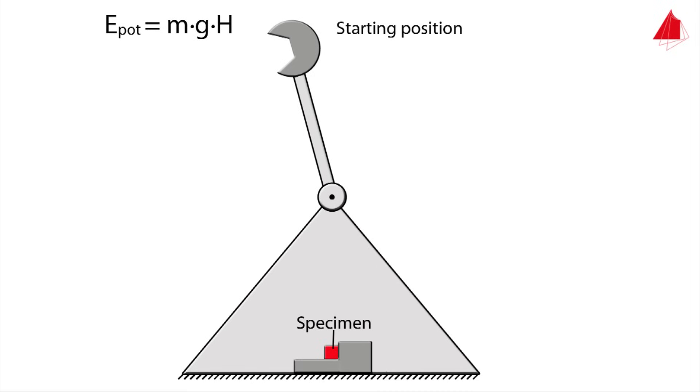Here is the main principle of the measurement. In its starting position, the pendulum only has potential energy. It is given by mass of the hammer M times gravitational acceleration G times starting height H.